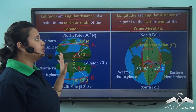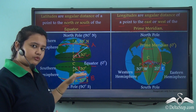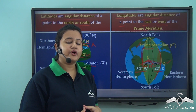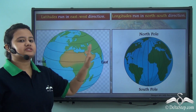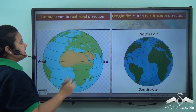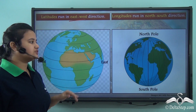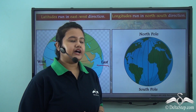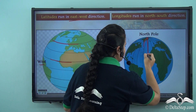So both latitudes and longitudes are angular distances. In the case of latitudes, the angular distance is measured with respect to a point lying to the north and south of the equator, whereas in the case of longitudes, the angular distance is measured with respect to the prime meridian and the point must lie to the west or east of the prime meridian. The second difference is that latitudes run in an east-west direction, as we can see in the picture where latitudes are drawn horizontally from west to east. Longitudes, on the other hand, run in a north-south direction — they are vertical lines connecting the north pole and south pole.